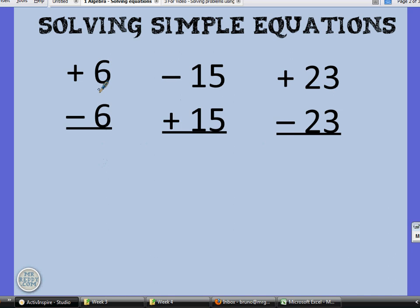Some of those things include what you get when you have a number and you take away the same number from itself. For example, when you have 6 and then you take away 6, you get 0. When you have negative 15 and then you add 15, you also get 0. And when you have positive 23 and then take away 23, you get 0. It might seem very obvious, but you'll see why we need that later on.